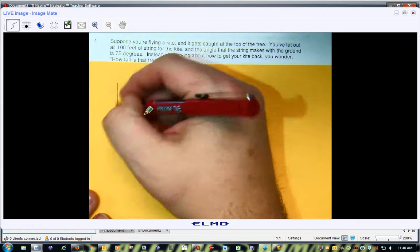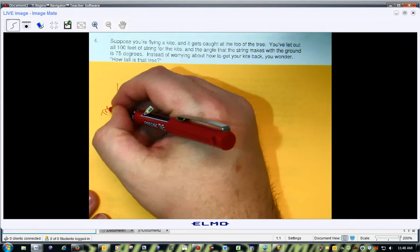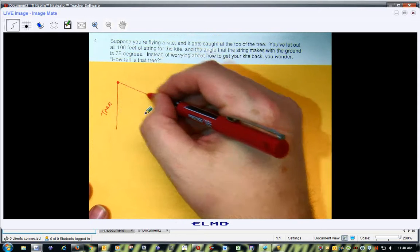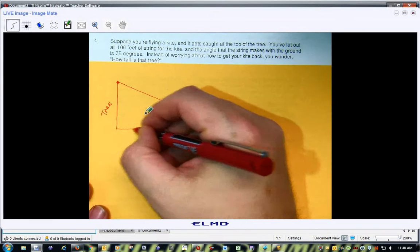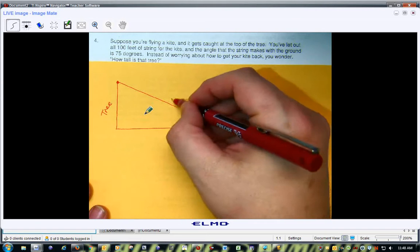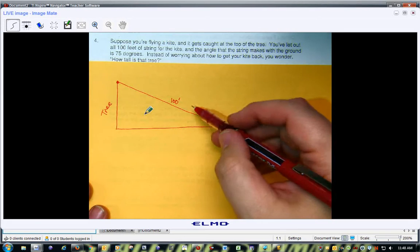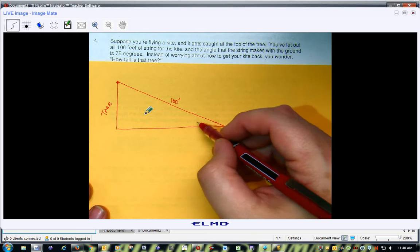So say this is your tree, there's a kite, and basically what you're saying is I let out 100 feet of string, the angle that the string makes with the ground is 75 degrees.